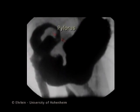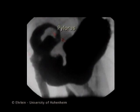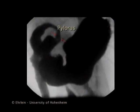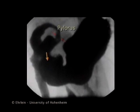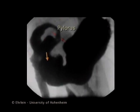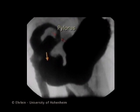During the contraction of the terminal antrum, the pylorus closes and the residues of chyme are forced retrograde into the relaxing mid-antrum. This is the retropulsion and grinding phase.